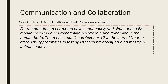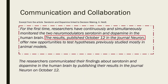Identifying the elaboration of communication within articles is pretty straightforward. For example, in this excerpt we are told that the researchers published their findings in the journal Neuron on the 12th of October. It is important when writing a science as a human endeavour task to summarise findings and discuss how examples illustrate key concepts in your own words. In this case we could summarise by saying the researchers communicated their findings about serotonin and dopamine in the human brain by publishing their results in the journal Neuron on October the 12th.